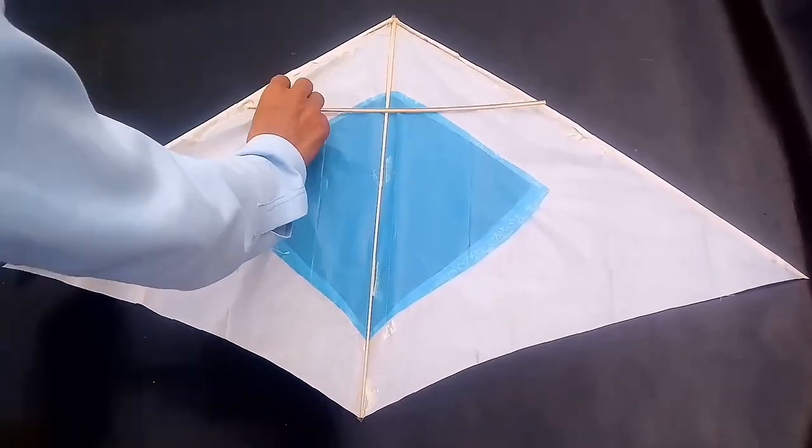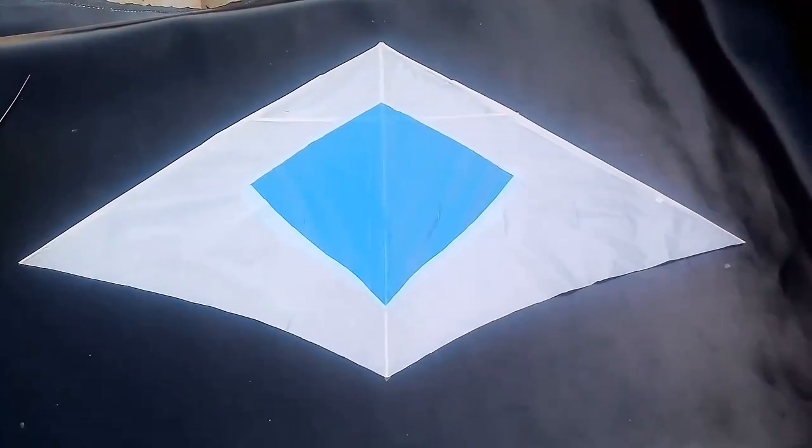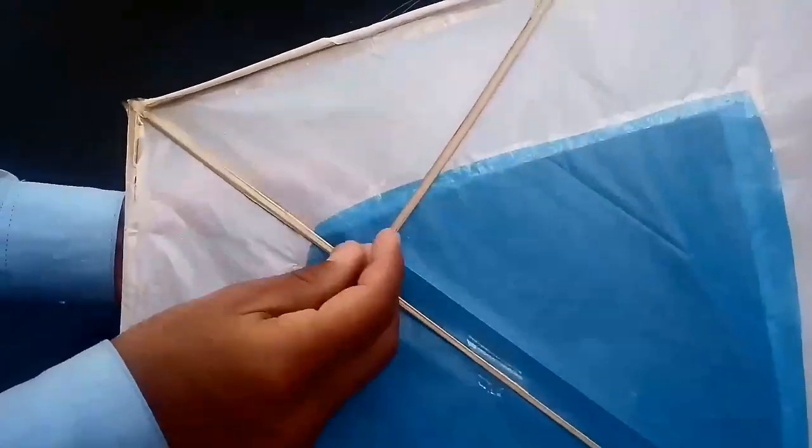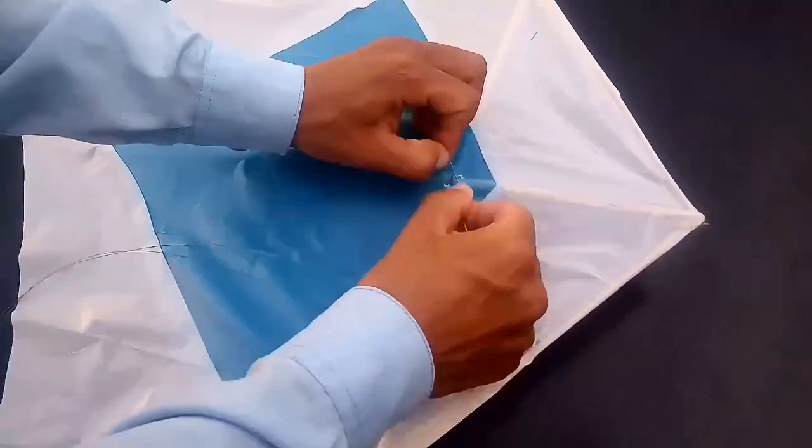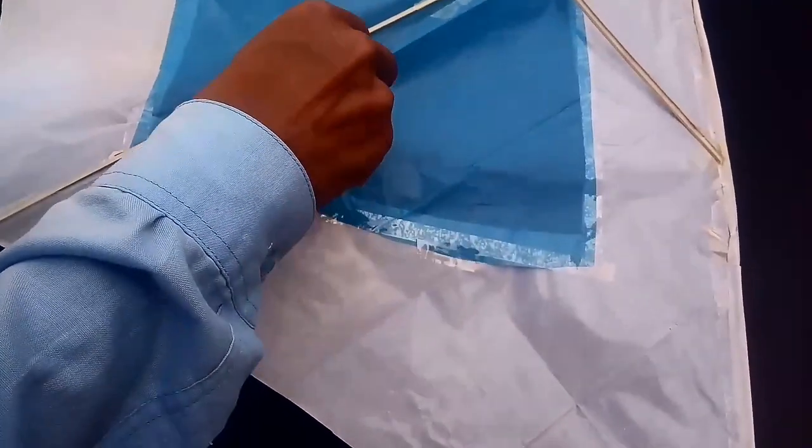We are jointing the bumble stick on the upper side of the kite with installation tape. This is our international, unique kite. It's ready. We are making the knot now. Please like and share our video on social media.